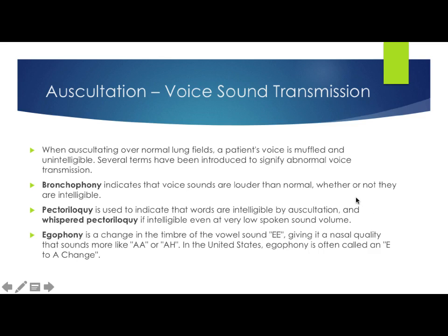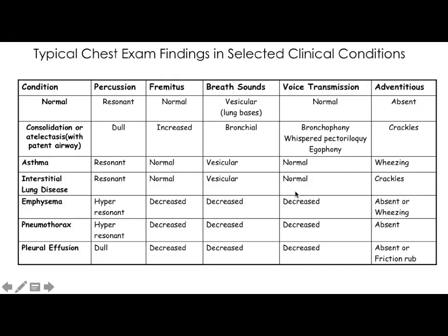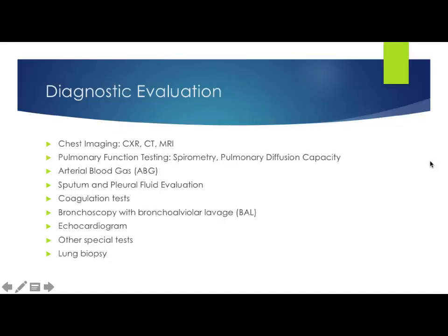Egophony is a change in the timbre of the vowel sound of E. With our stethoscope on the chest, if the patient says 'E' and it has a nasal quality that changes to an 'A' sound — an E-to-A change — that is indicative of egophony. Egophony is Greek for 'voice of a goat.' Next is what I call a money slide — it has a lot of information in one place and you should definitely know it. It lays out all the pertinent physical exam findings for any given pathology.